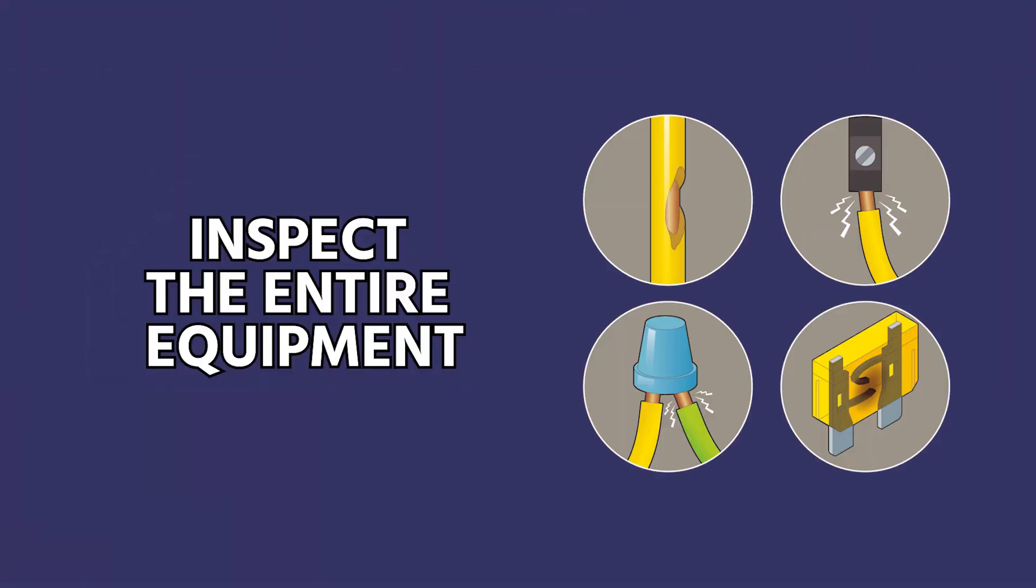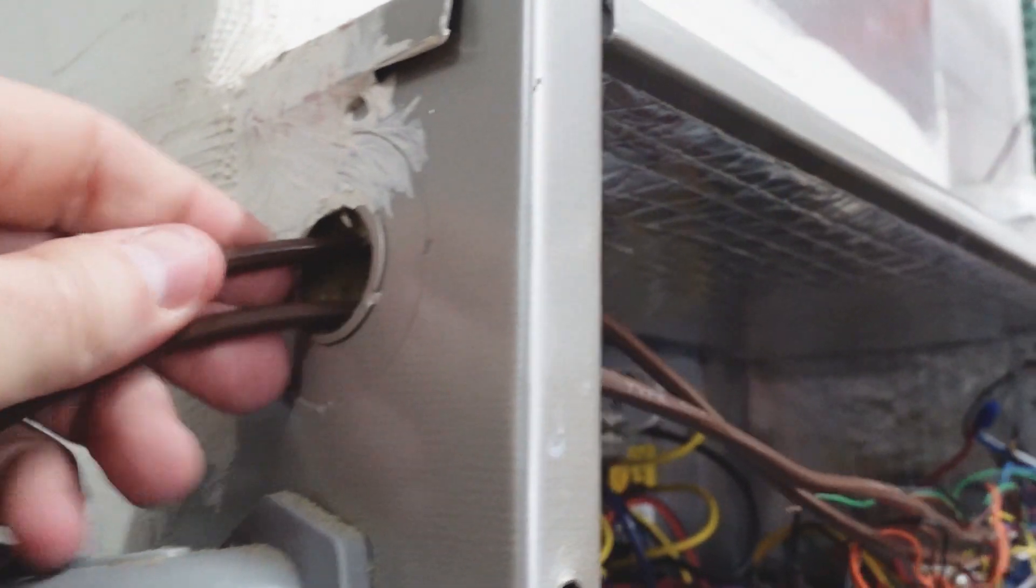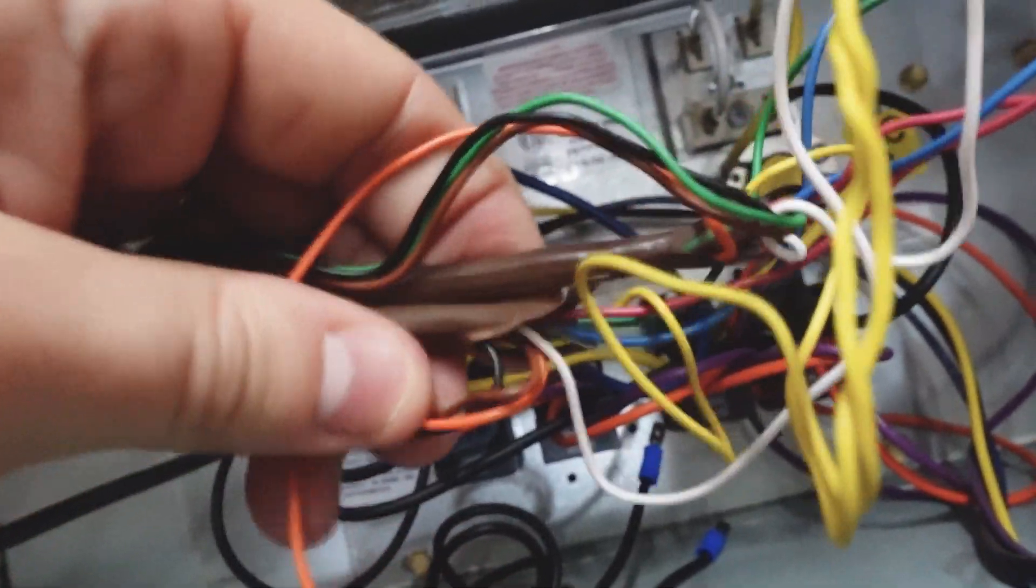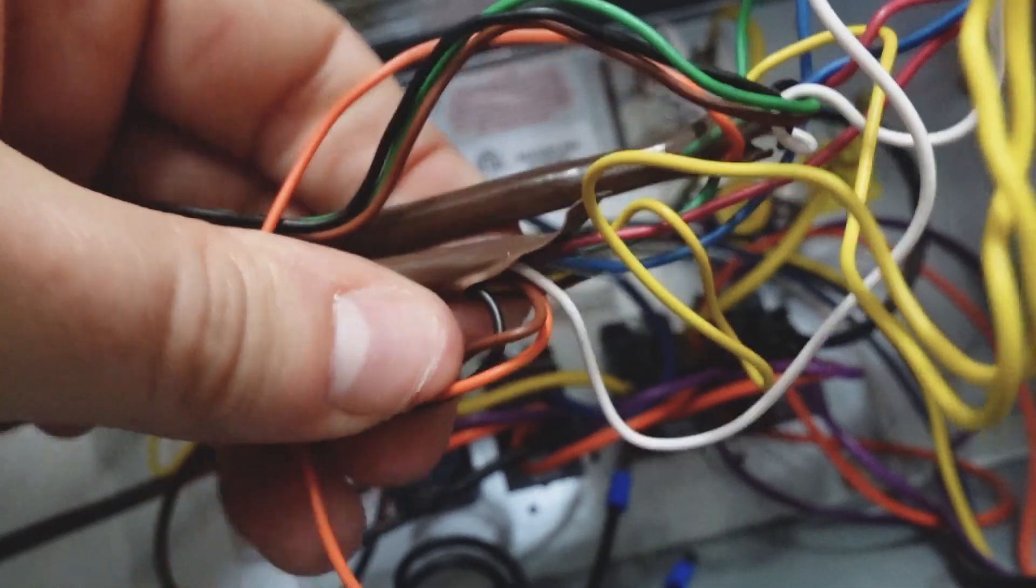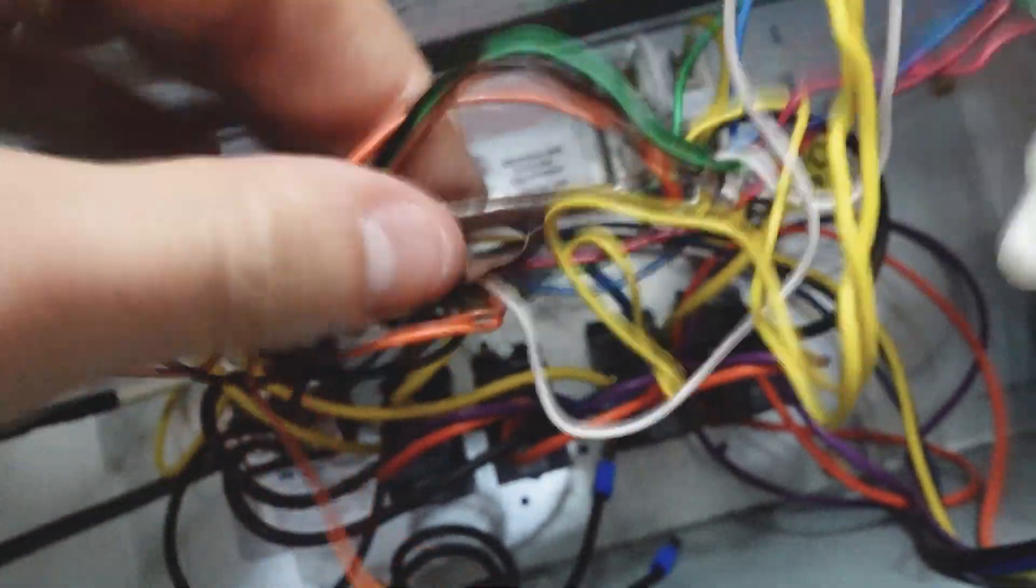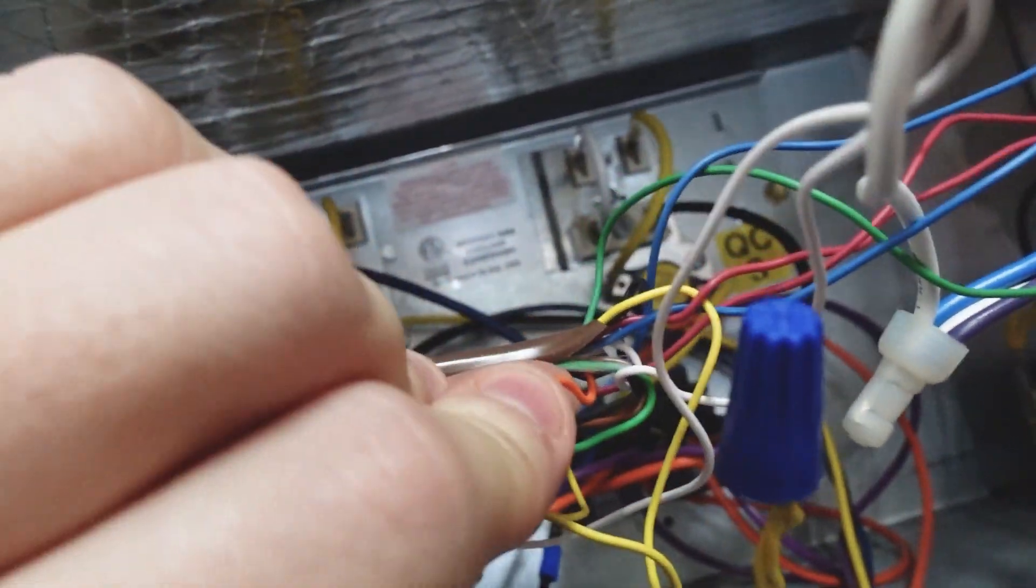When a system has a blown fuse, you want to pay attention to all the connectors and anywhere that the wires are moving through the cabinet. You can see here these thermostat wires don't have a proper grommet protecting them. It would be very easy for this sharp metal to damage the jacket, which could cause a short circuit. We'd want to inspect the places that previous technicians stripped back the outer jacket to make sure they didn't ring around the wire and create any nicks.